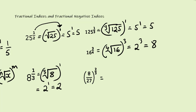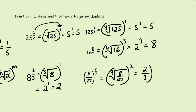This one: 8 over 27 to the power of 2 over 3. We have 3 in the denominator, so we take the cube root of 8 over 27, to the power of 2. Cube root of 8 is 2, cube root of 27 is 3, and then we square: 2 squared is 4, 3 squared is 9, giving us 4 over 9.